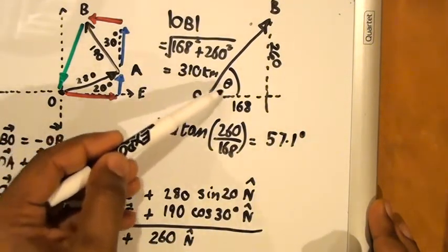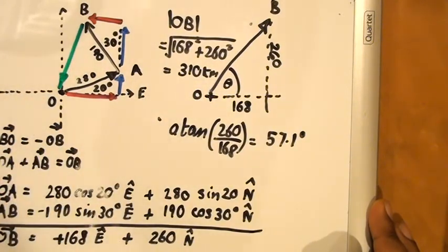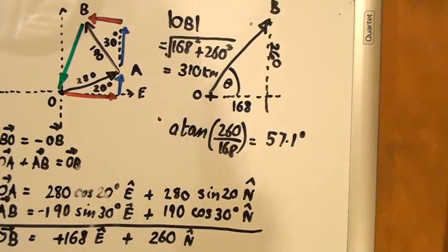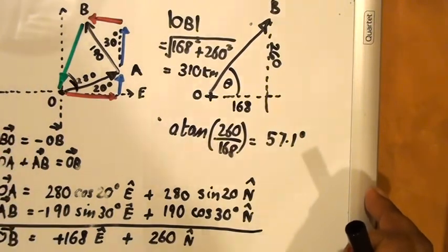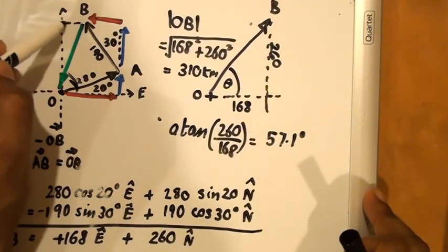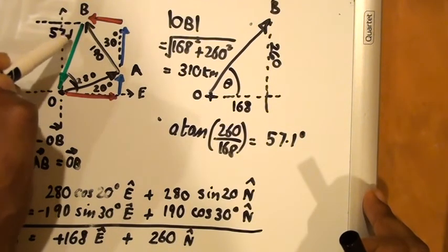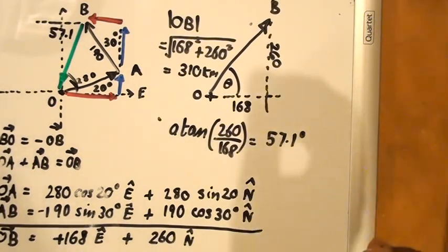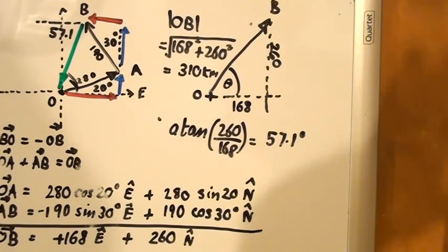We can now use this information to express the direction and size of the vector that we want. As we know that this angle here is 57.1, we can see that the vector B to O is 310 kilometers, 57.1 degrees south of west. And if we fly along that direction, we will get home from B back to O.